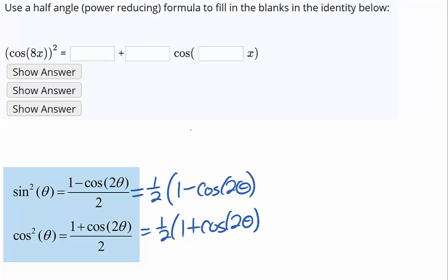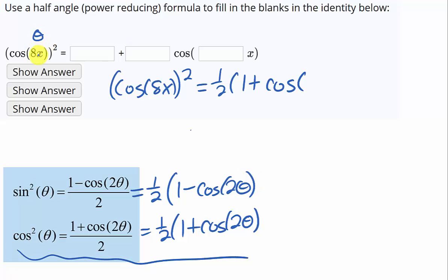So we have cosine of 8x and that is squared. And so I can use this lower formula and that's going to equal 1 half times 1 plus the cosine of 2 theta. In our case, this is what our theta is, it's 8x. So we need twice that so that's going to be 16x.